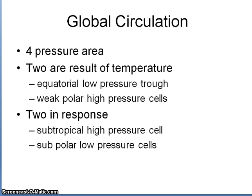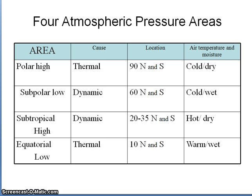When we look at global circulation patterns, we're looking at four pressure areas on the Earth's surface — two as a result of temperature. High temperatures cause equatorial low pressure troughs, and cold temperatures cause weak polar cells. In response to that, on either side, there are dynamic winds being pushed by the high and low pressure systems. You might see a chart like this on an exam asking you to fill in the blanks, identifying where these atmospheric pressure cells are and what their air temperature and moisture regimes are.